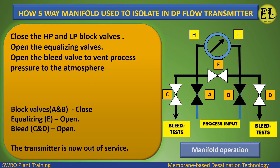How a five-way manifold is used to isolate in a DP flow transmitter: close the HP and LP block valves, open the equalizing valve, then open the bleed valve to vent process pressure to the atmosphere. Block valves A and B: close. Equalizing valve E: open. Bleed valves C and D: open. The transmitter is now out of service.